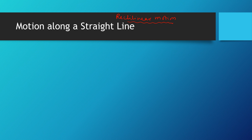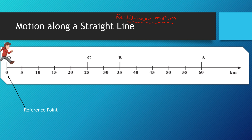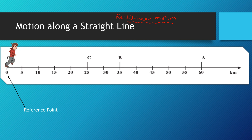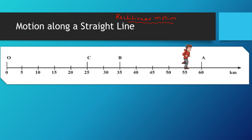We are considering the motion of a boy moving along a straight path. The boy starts his journey from point O, which is treated as the reference point. Let A, B, and C represent the position of the boy at different instances. At first the boy moves through C and B and then reaches A. Then he moves back along the same path and reaches C through B. So it's a motion along a straight line.